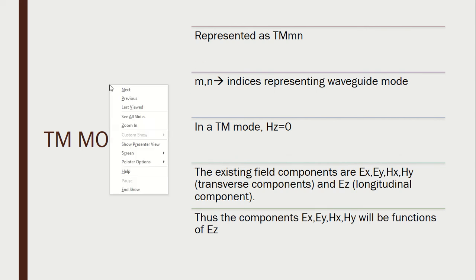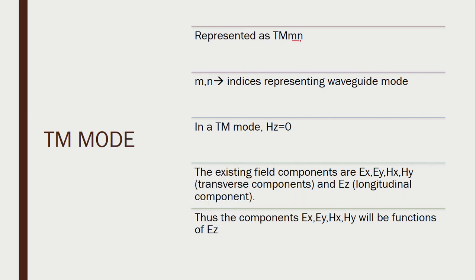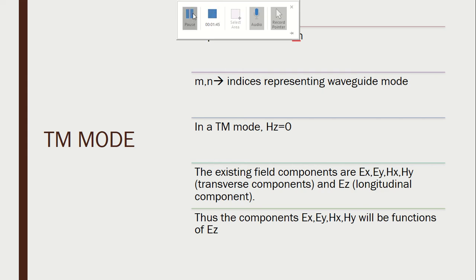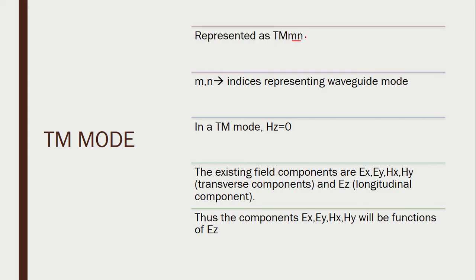We will start with the TM mode, which is represented as TM_MN, where M and N represent the mode of the particular waveguide. In TM mode, the component HZ is zero, and the existing field components are EX, EY, HX, HY, and EZ. The four components EX, EY, HX, and HY will be a function of EZ. Since EZ is present in the direction of wave travel, these four components are functions of EZ and HZ is zero.